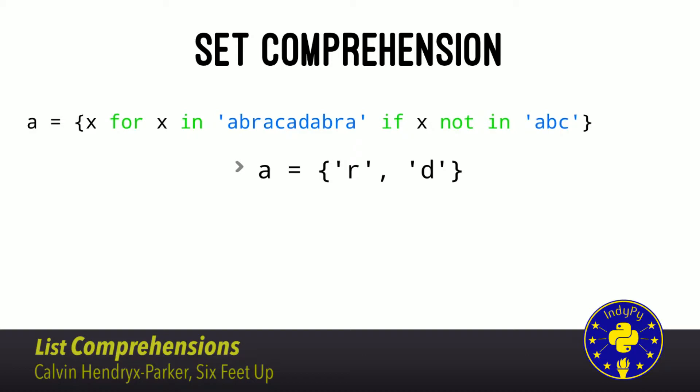Would a list comprehension run faster or slower than the equivalent for loop? It's actually faster. The list comprehension is more efficient — it comes down to less memory allocation. So the comprehension is actually more efficient than writing out the more verbose for loop.